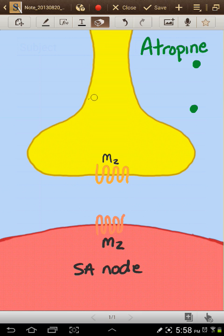First, we have a cholinergic nerve here. Okay, cholinergic. And it's innervating the SA node, right, the pacemaker of the heart.